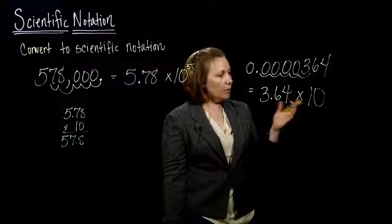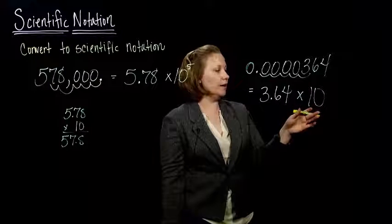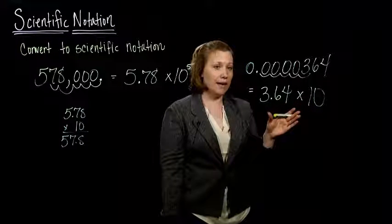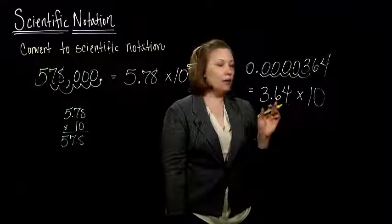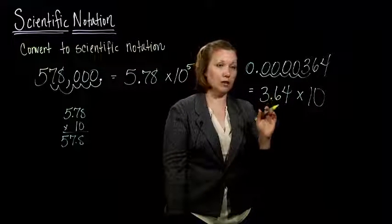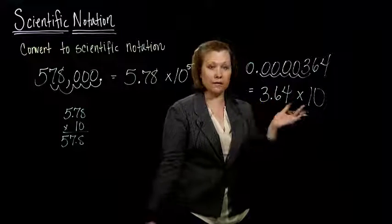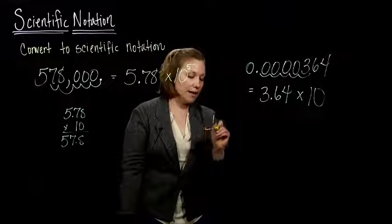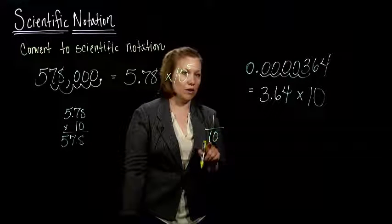So if we remember way back from whenever you learned it, when you divide by 10, we move our decimal place 1 to the left to make our number get smaller, because dividing by 10 makes our number smaller. Well, if you think about what dividing by 10 is, it's 1 over 10.